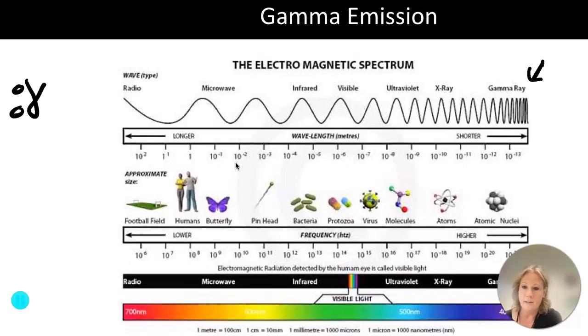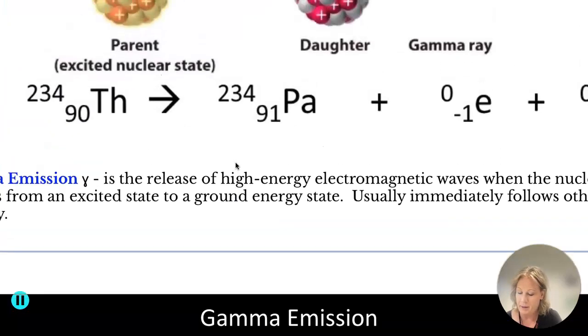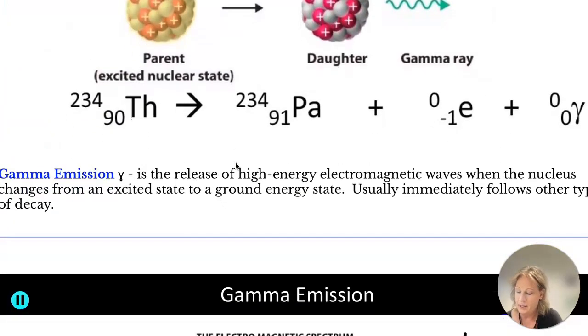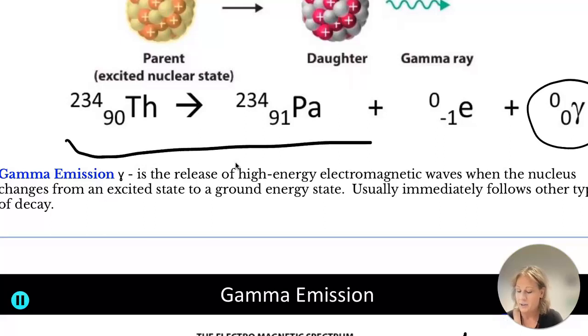Depending on the font, sometimes you'll see a gamma particle looks like this. It doesn't really show you that loop. It looks more like a Y. But anyways, gamma emission typically happens, like here's the gamma emission, alongside or just instantly after a beta decay or an alpha decay.